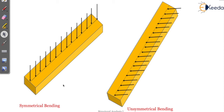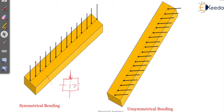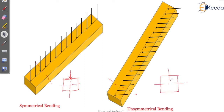If we consider a cross section and cut it anywhere, this beam acts in a way that creates symmetrical bending in the particular structure. Now in another case, the cross section is similar, but the load is acting at some angle. So a symmetrical cross section with a load acting at some angle may create unsymmetrical bending — it can become a cause for unsymmetrical bending.